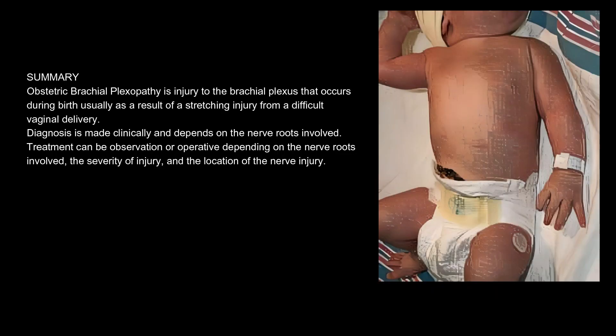Summary: Obstetric Brachial Plexopathy is injury to the brachial plexus that occurs during birth, usually as a result of a stretching injury from a difficult vaginal delivery. Diagnosis is made clinically and depends on the nerve roots involved. Treatment can be observation or operative depending on the nerve roots involved, the severity of injury, and the location of the nerve injury.